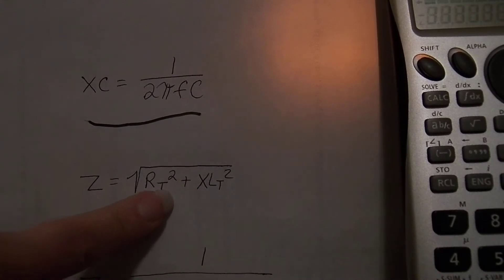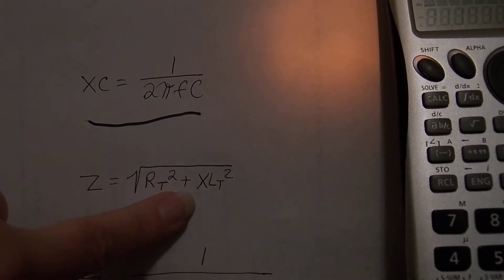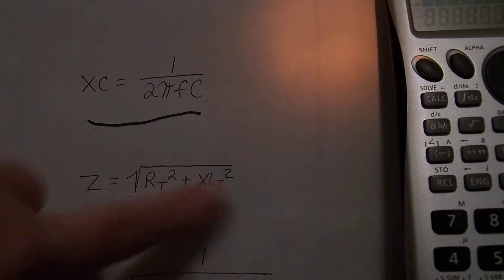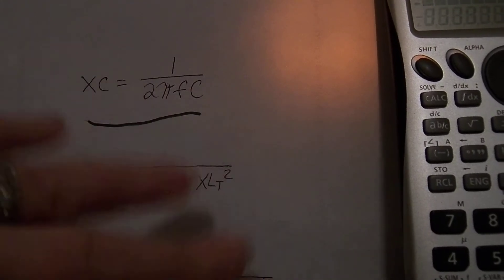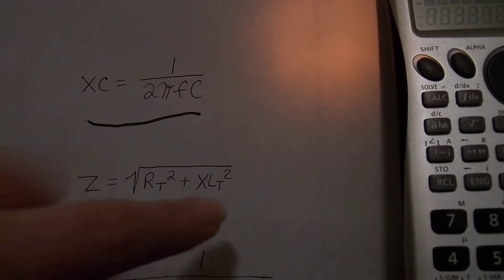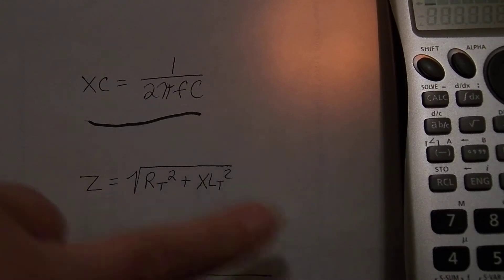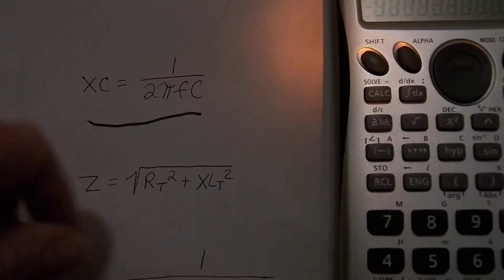You would put your total resistance and square it, and then add your total inductive reactance and square it. Combine that together, so hit your equals, and then square root it and hit equals again. And you should get the correct answer.